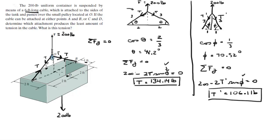So as you can see when you attach the cable to C and D you get only 106.1 pounds and when you attach it to A and B you get 134.14 pounds, so the one that is better for the cable is attaching it to C and D, and the tension is 106.1 because they ask you what is this tension.